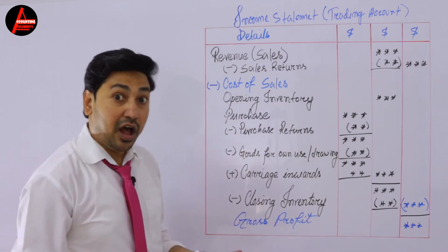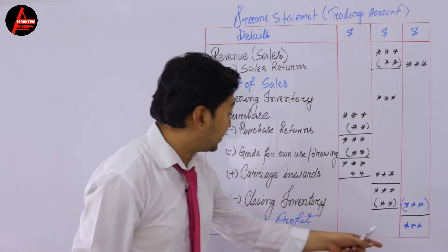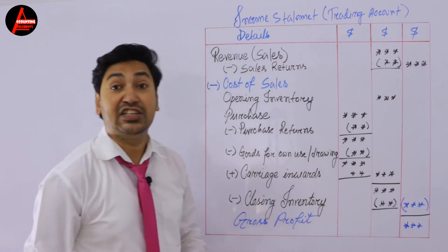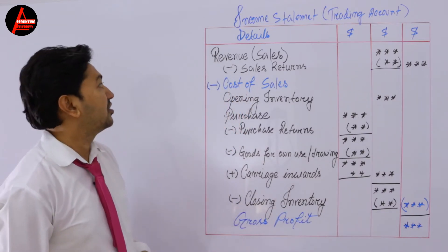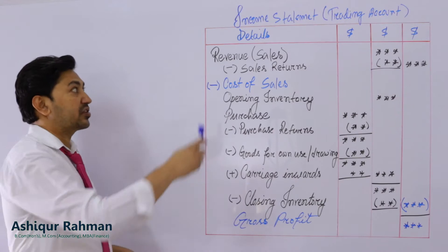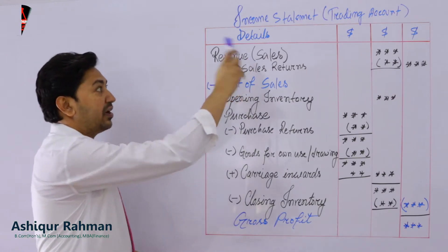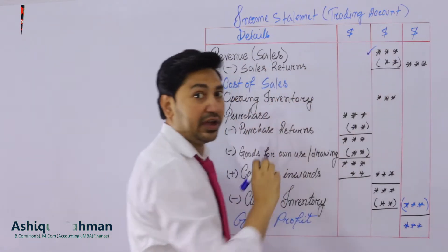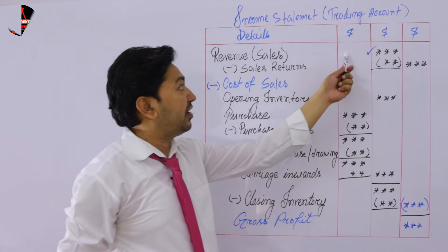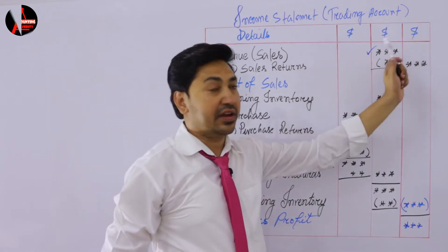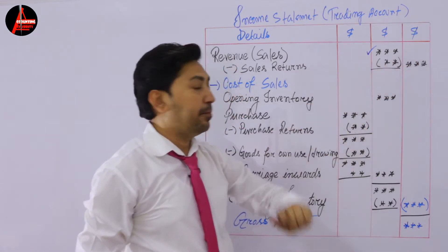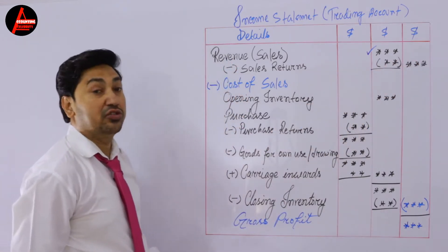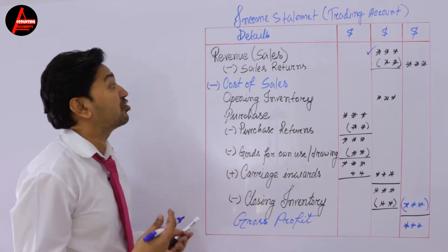So that you can calculate everything properly and understand how gross profit will be generated. First of all, we write sales revenue — the value will be in the middle column, not the first or last column.